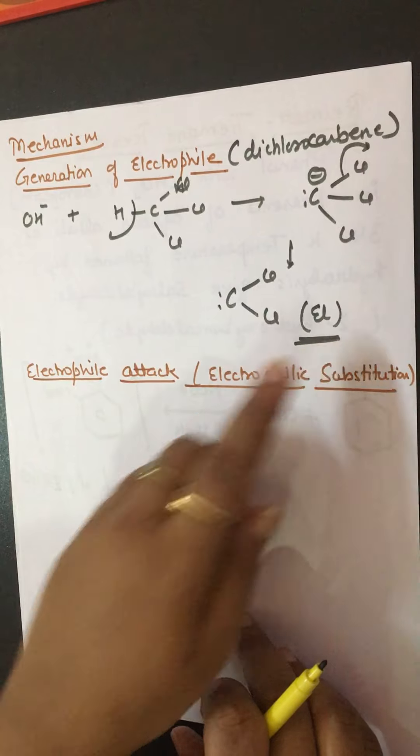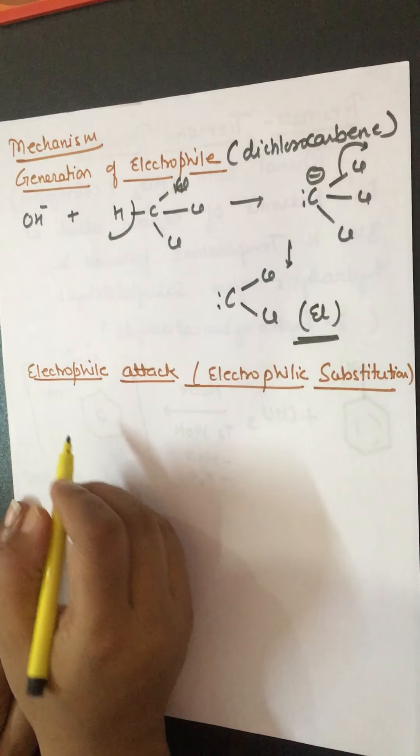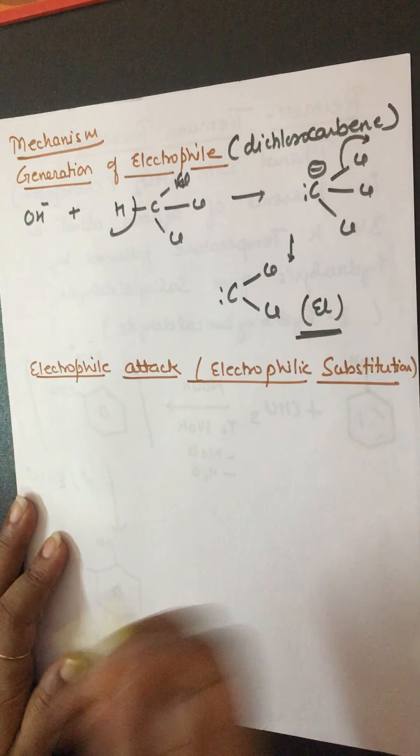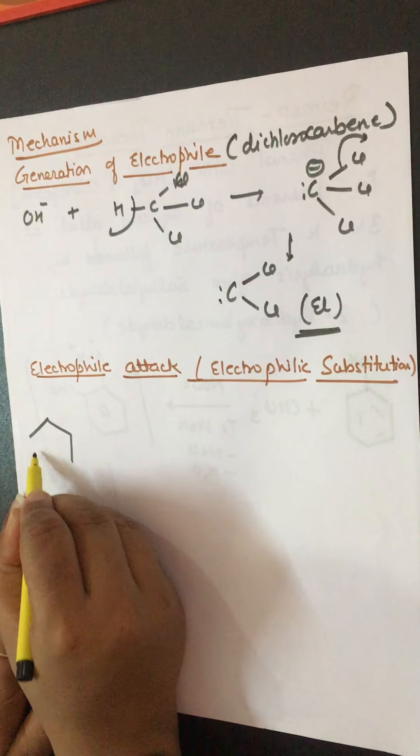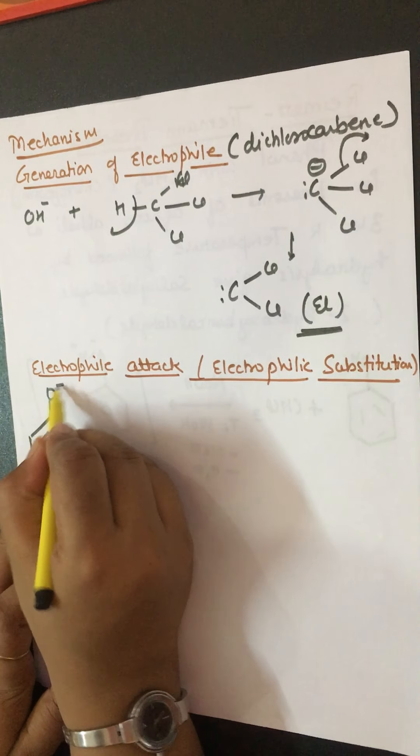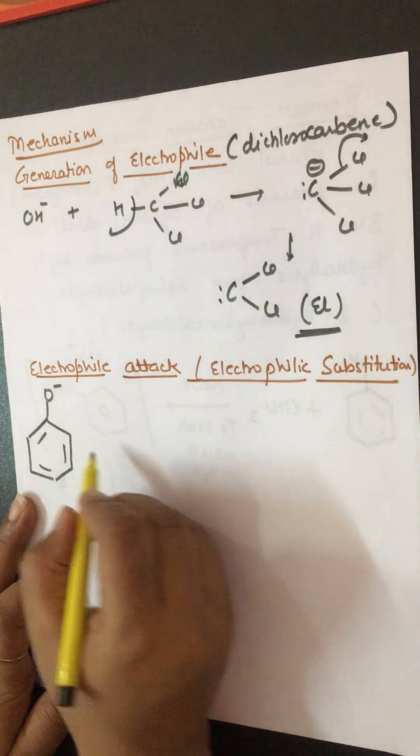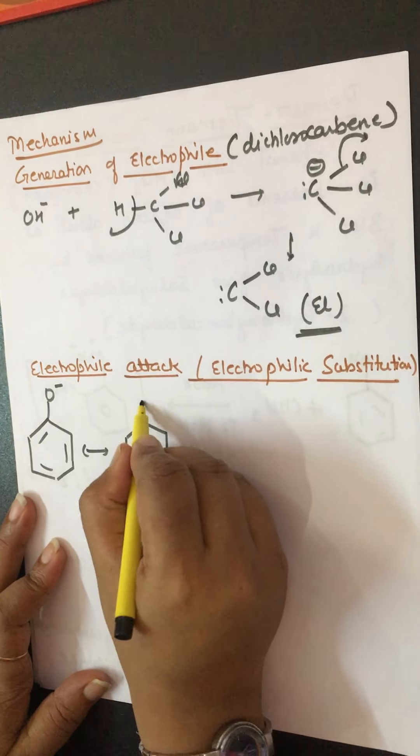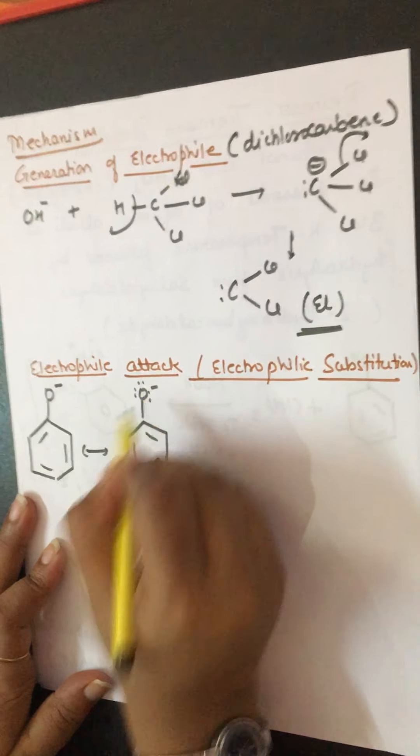Now this electrophile will attack on phenol. The next step is electrophilic attack or electrophilic substitution will take place in phenoxide ion. Phenoxide ion is formed, and I can write it in this way also.